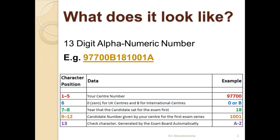Characters 7 and 8 represent your examination year — the year you first started doing this examination. In this example it's 2018, but they don't give you the full four-digit year; instead they take the last two digits. If you were to do this examination in 2005, it would show as 05; in 2019, it would show as 19. The next four characters — in this example 1001 — represent your candidate number, which is a four-digit number.